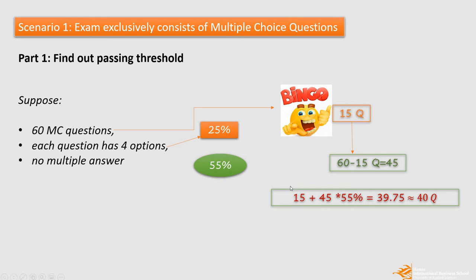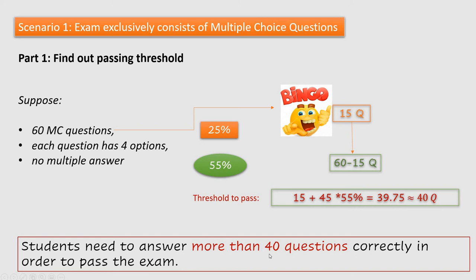And then we can calculate if we add these 15 questions as lucky questions to 45 multiplied by the passing grade, 55%. Then we get 39.75% and we round it up to 40 questions. This indicates that the threshold to pass is students need to answer more than 40 questions correctly, including 40.